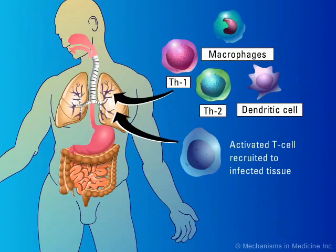T cells are recruited to the site of infection. Attaining an appropriate balance between Th1 and Th2 responses is thought to be important for achieving optimal antifungal protection while limiting autoimmune injury.